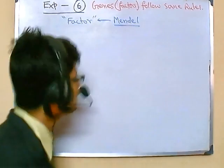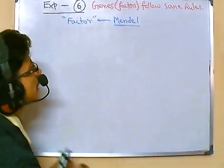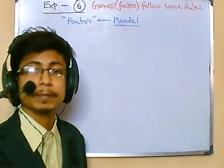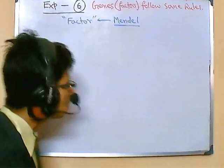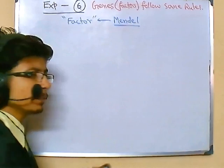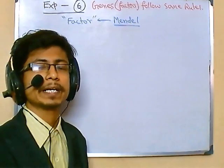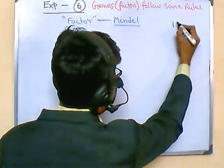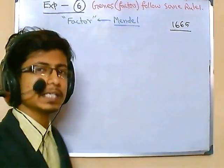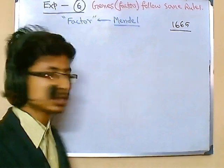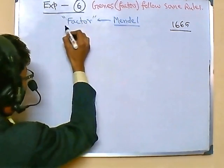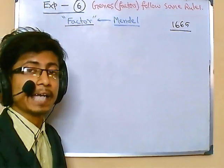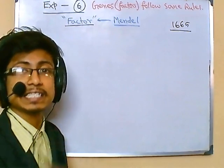In this case, the key experiment was conducted by Theodore Schwann. Theodore Schwann was one of the leading scientists for cellular biology as well as genetics. Cell discovery had already been made in 1665, many years prior. Theodore Schwann found that the factor being talked about by Gregor Mendel was a real thing, and that it is present inside the living cell.